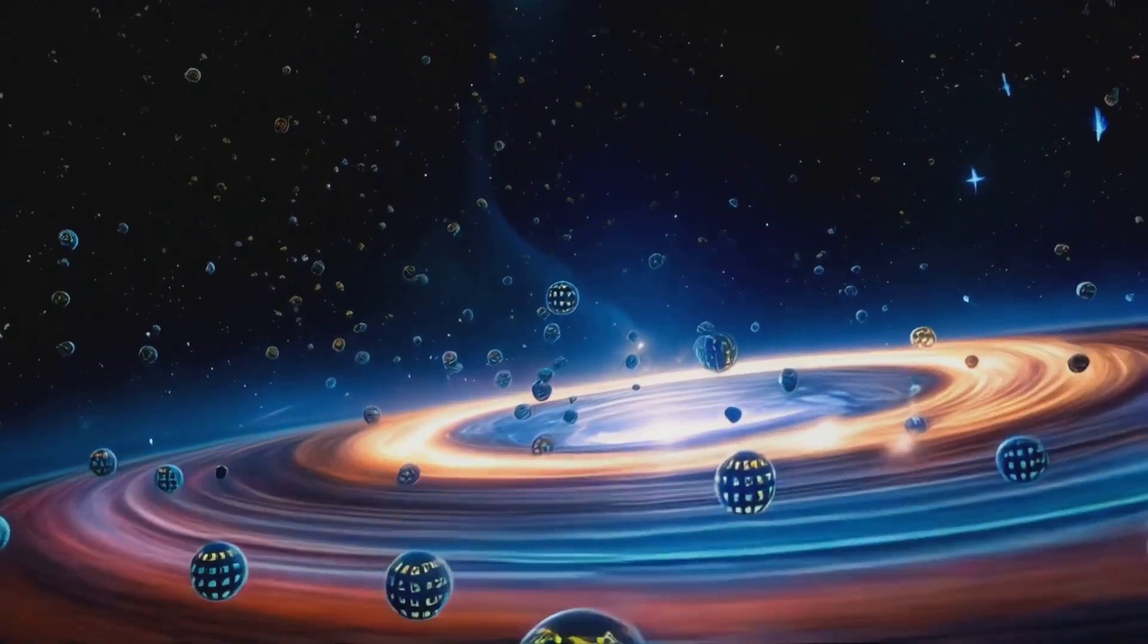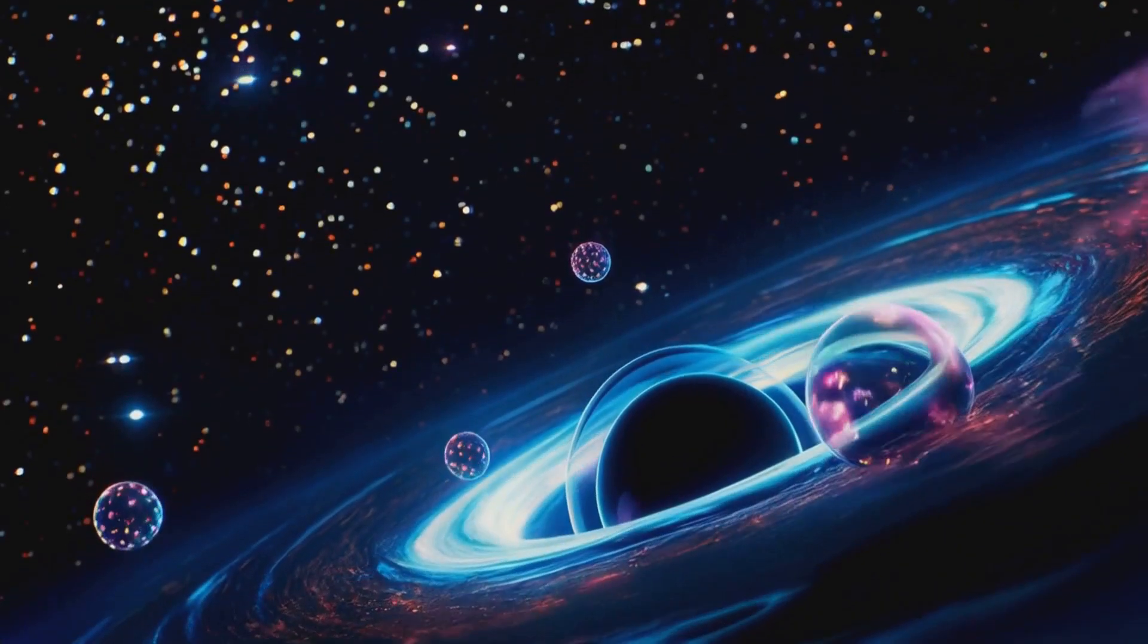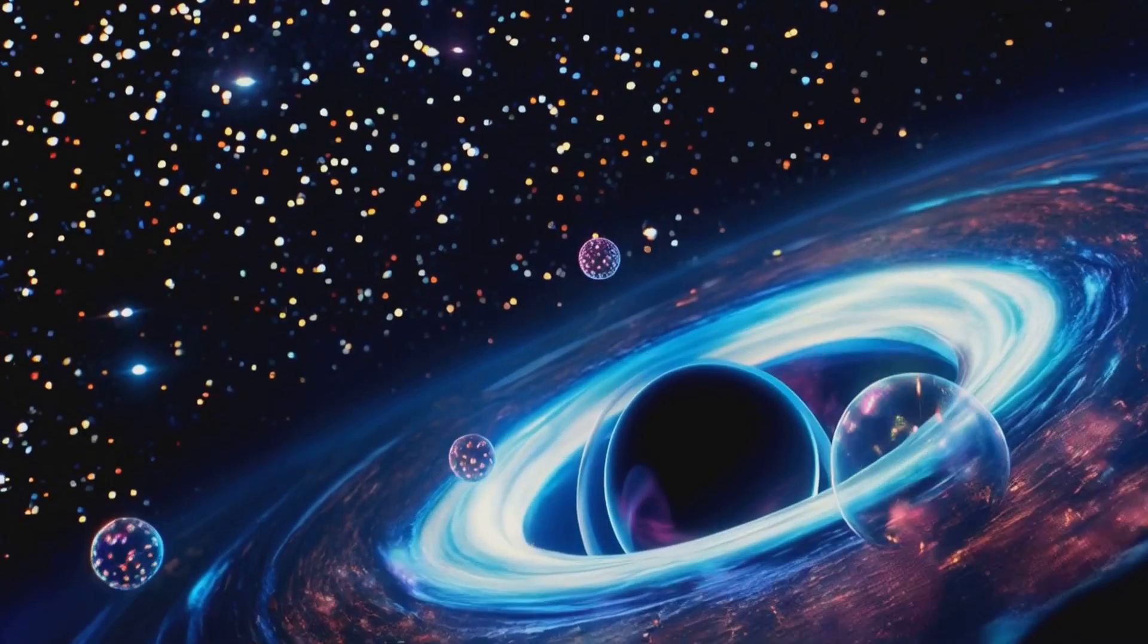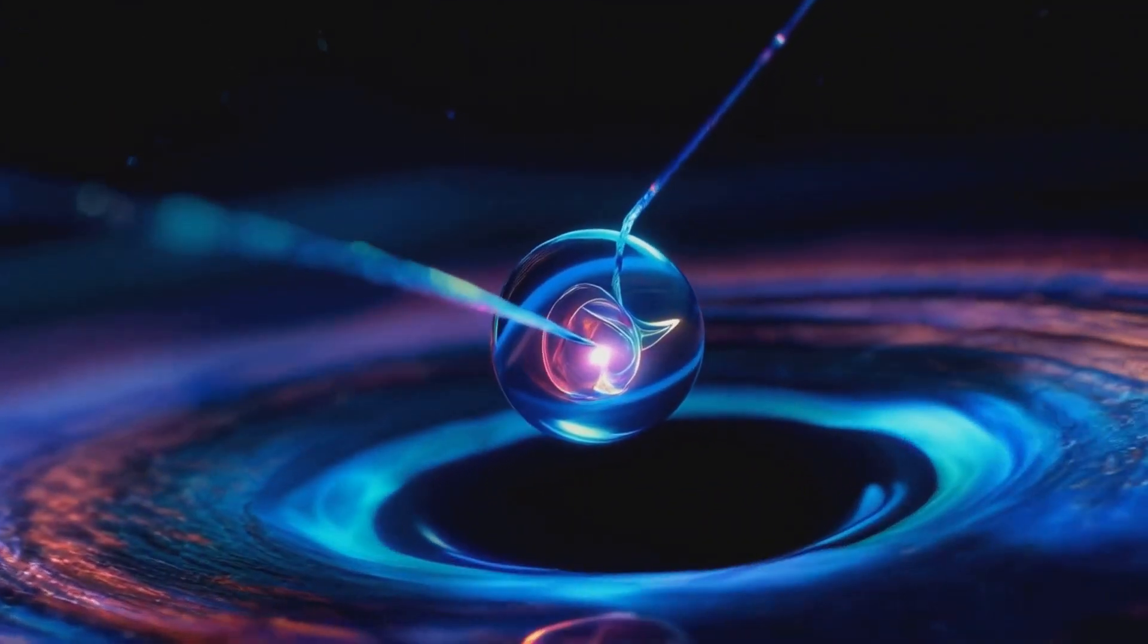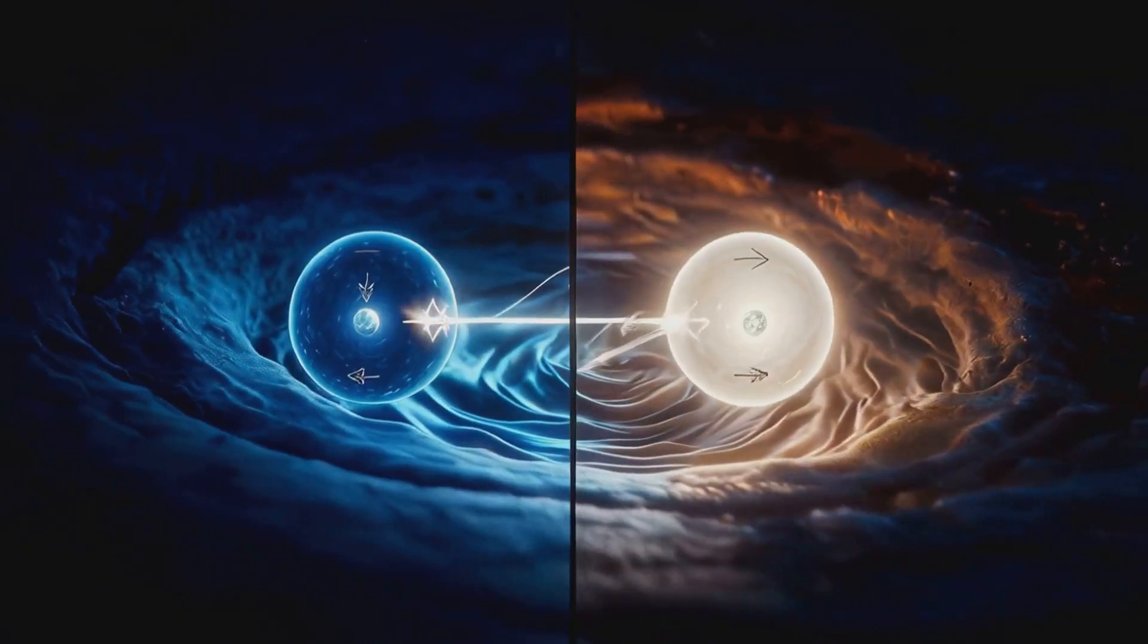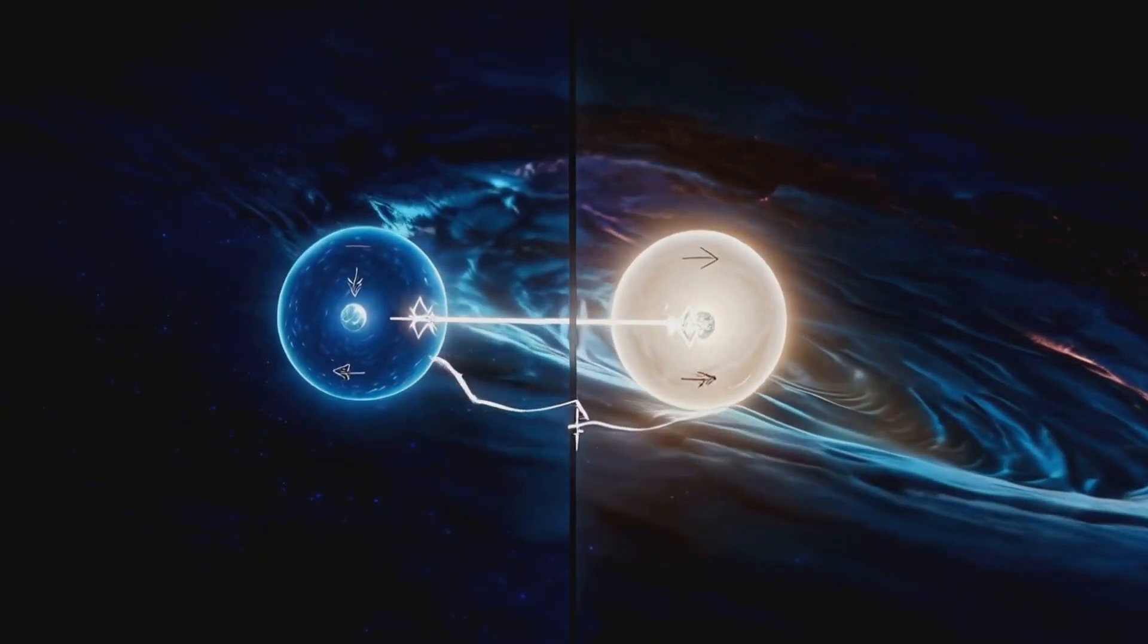The singularity and the event horizon are connected by quantum entanglement, a profound link where every quantum bit or qubit on the event horizon has a perfect partner deep within the singularity. They are bound together, mirroring each other, no matter how far apart they seem.